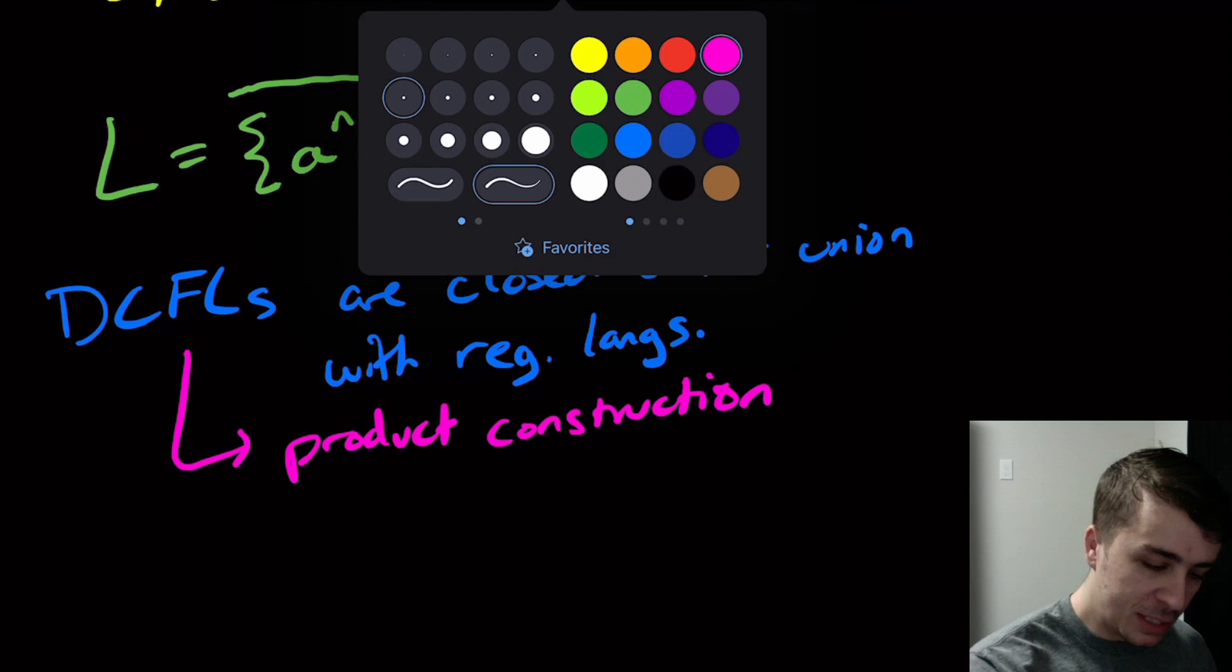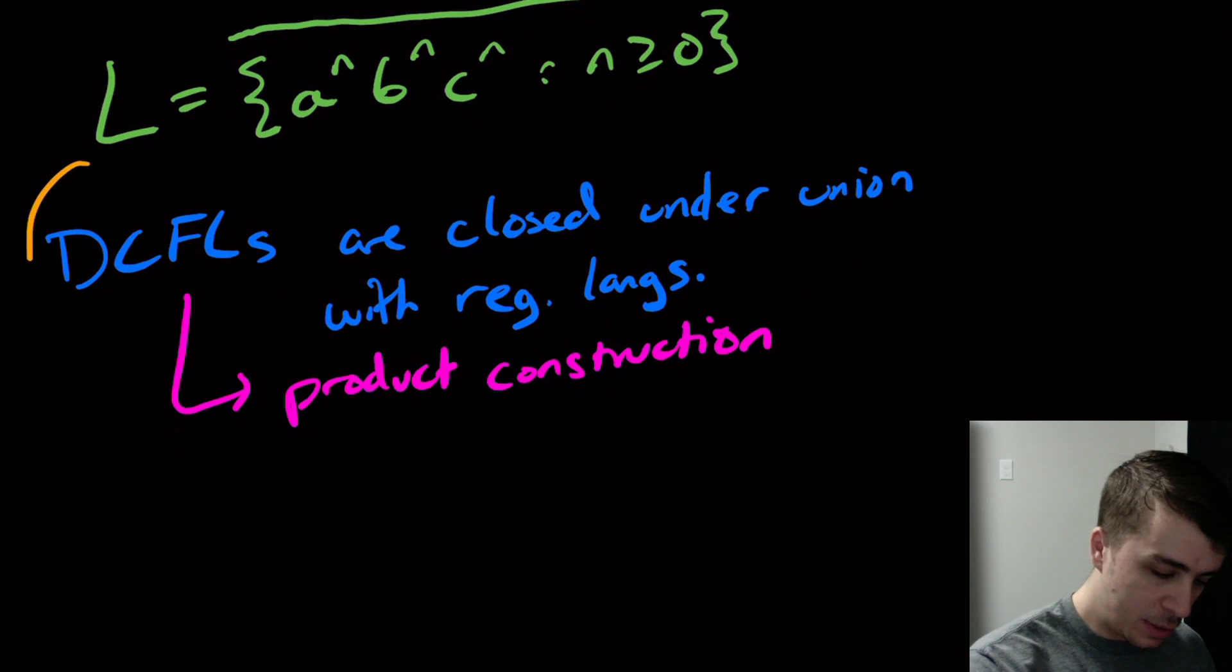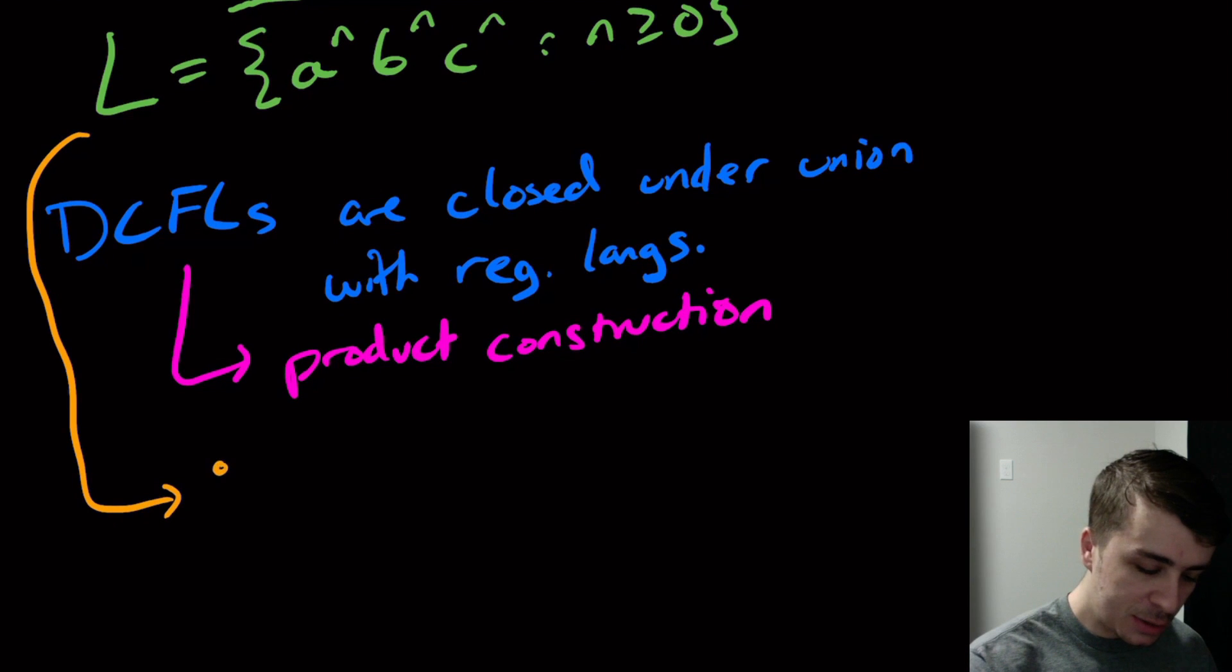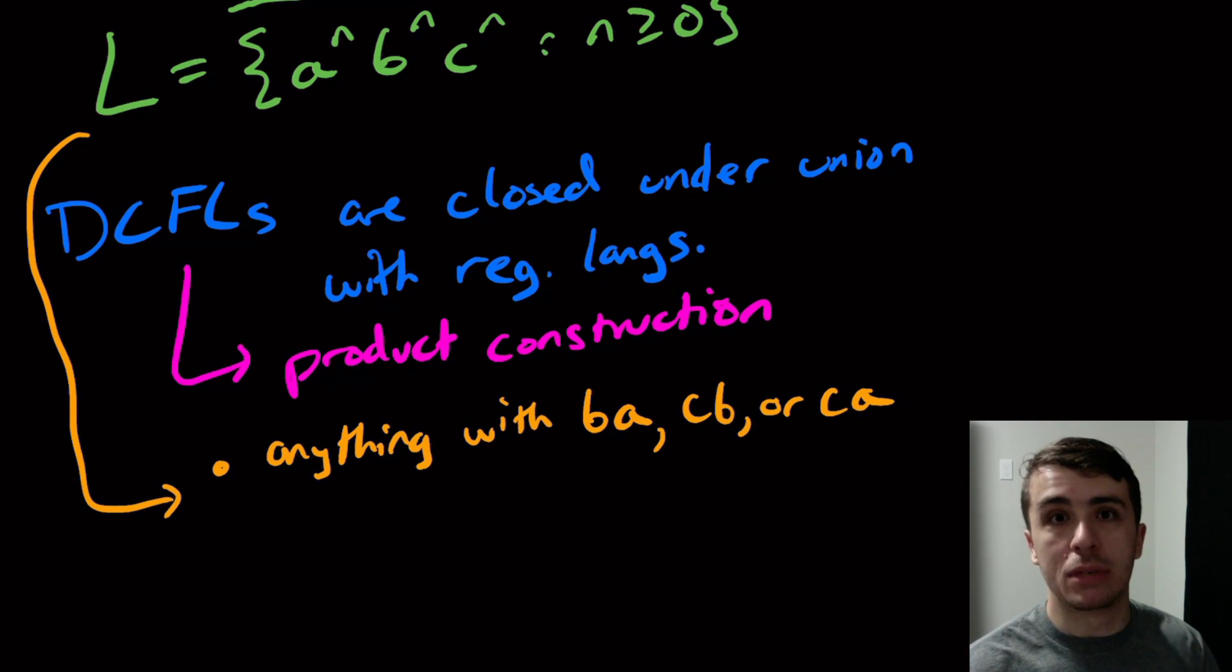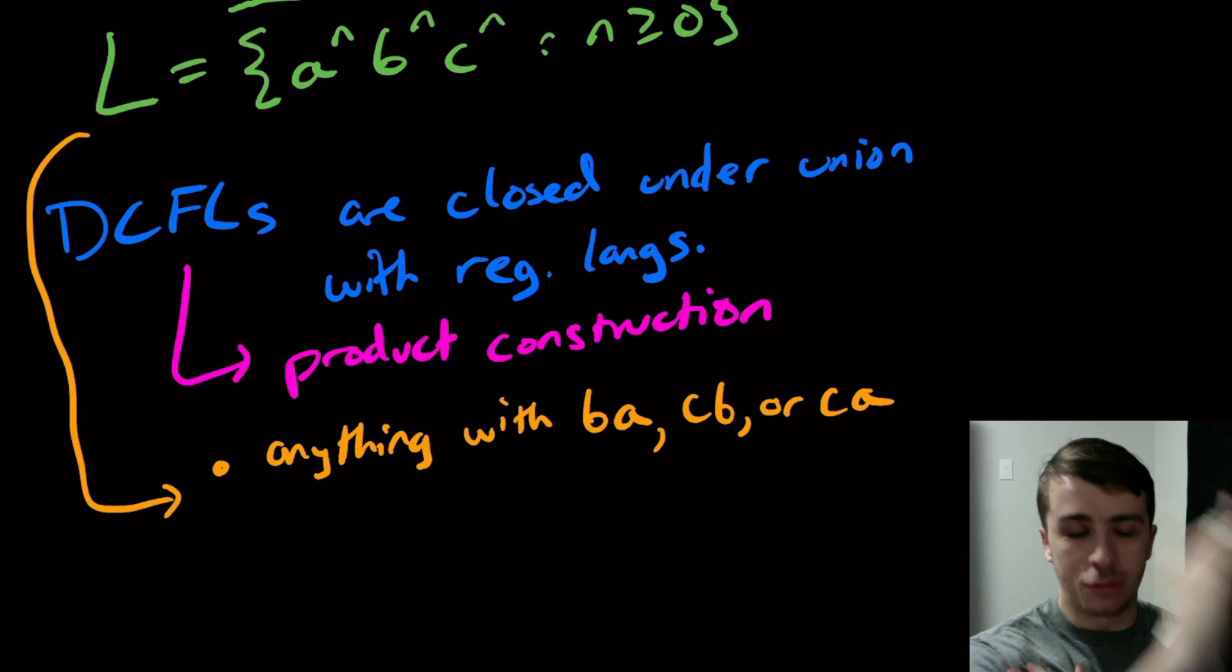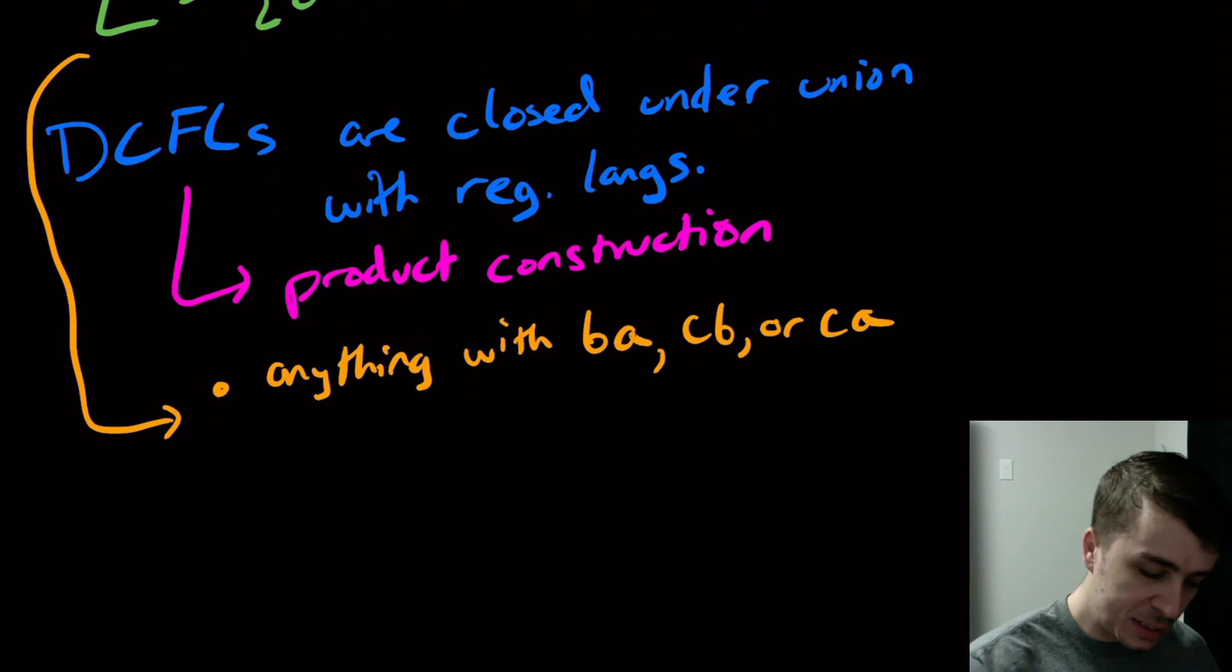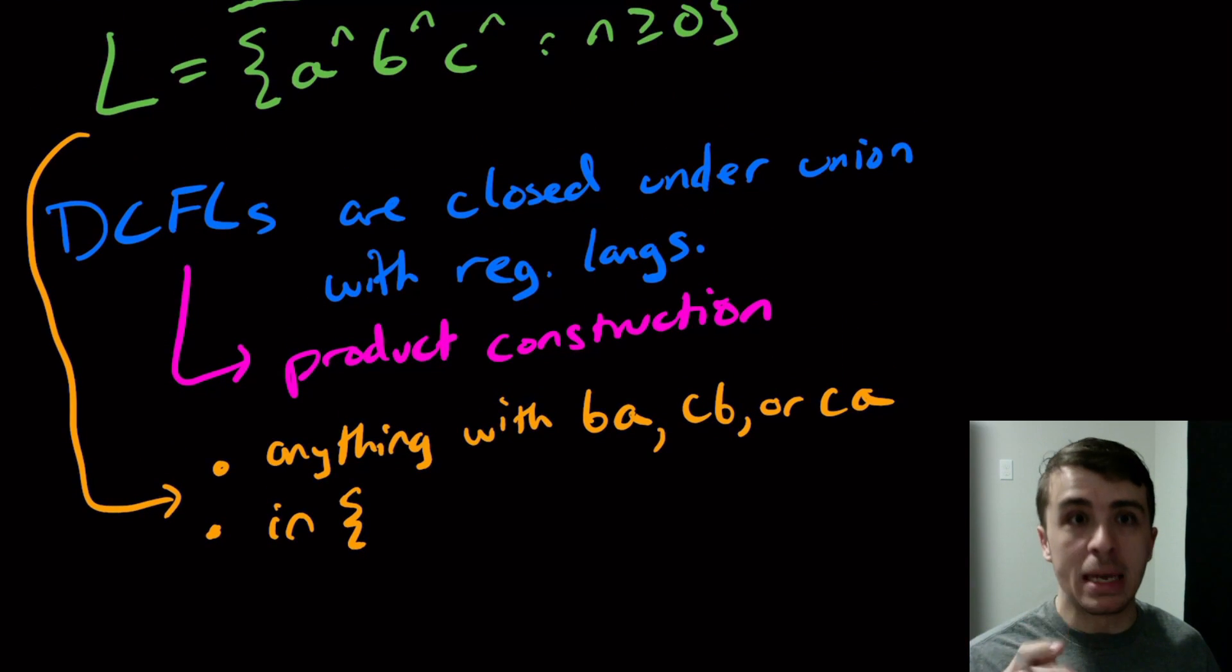So then what are the components of this language? For this language, what do we have? Well, so what are the strings that are in the complement? So it's anything with a BA in the string, CB in the string, or CA in the string. So if it has any one of those three substrings, then it must be in the complement language because the original language had A's followed by B's followed by C's. If it's in this language, which is, so if it's not one of those three, it must have A's followed by B's followed by C's, but the counts are wrong.